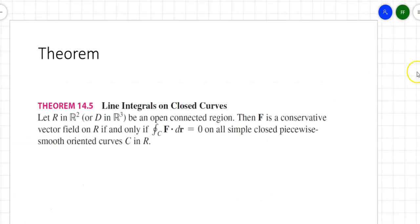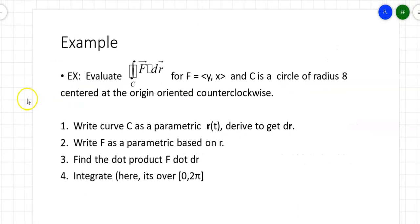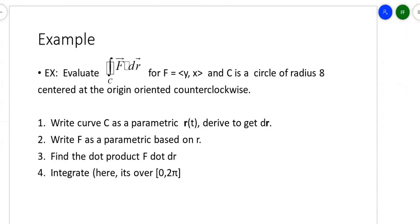There's a symbol — a small circle on the integral sign — that indicates integration over a closed curve. If you have a conservative vector field and integrate f·dr over a closed curve, the result is 0. So the line integral of a conservative vector field over any closed curve equals zero.